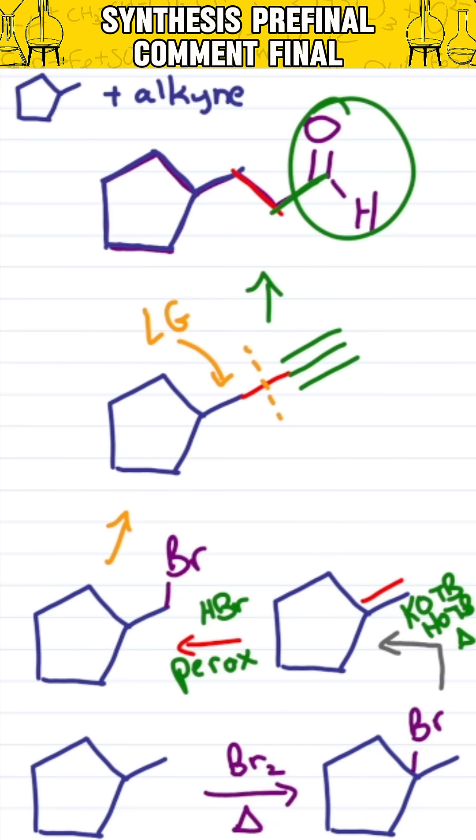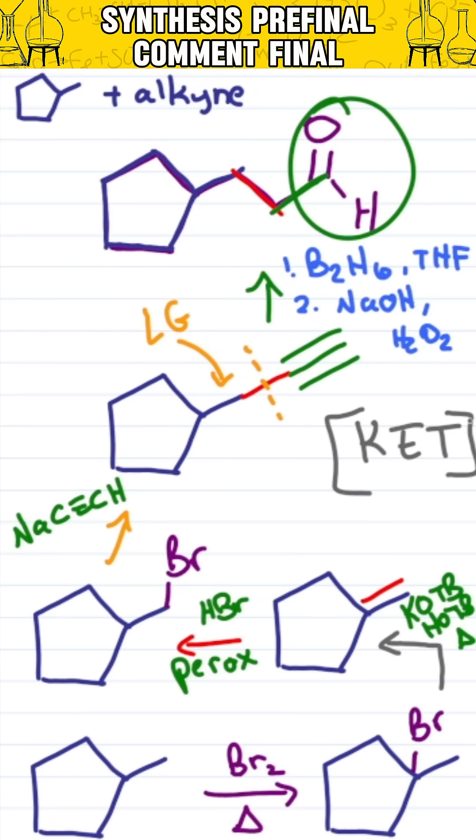Finally we bring in our NaCCH, an acetylide anion for the SN2 reaction, and react the terminal alkyne with B2H6 in THF followed by NaOH and H2O2 for the anti-Markovnikov hydroboration. This will give me an enol that will undergo keto-enol tautomerization for the aldehyde product.